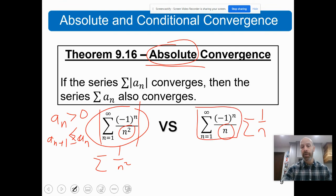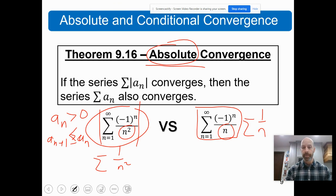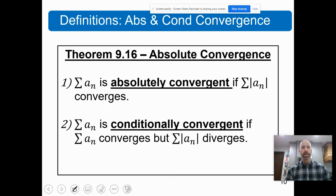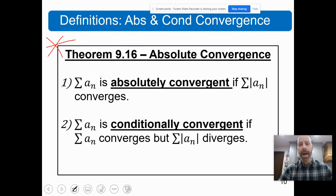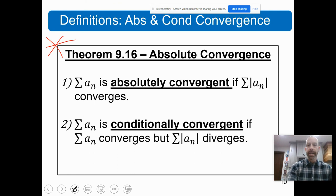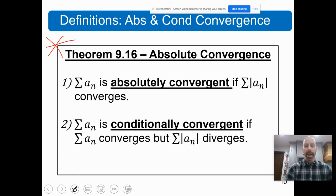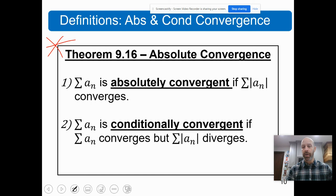This series does converge, but you cannot use the absolute convergence theorem to prove it. So this is the absolute convergence theorem: a series is absolutely convergent if the sum of the absolute value of A sub n converges, and it is conditionally convergent if the sum converges but the absolute value diverges — which is exactly what we just saw.